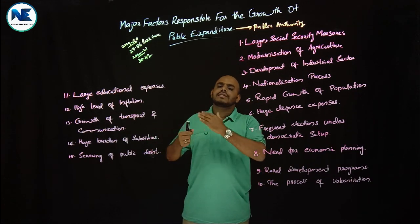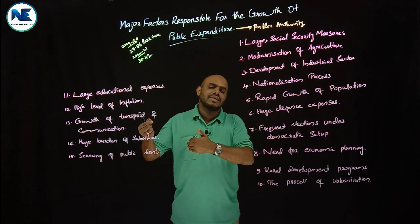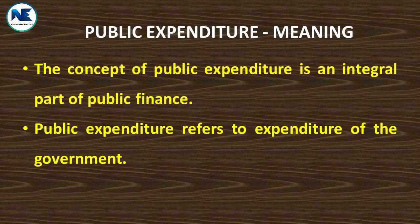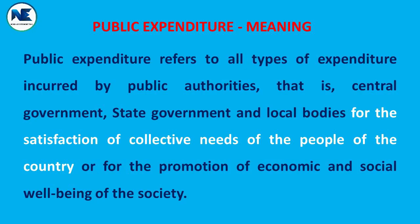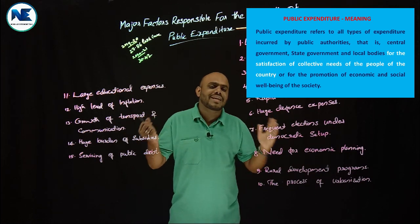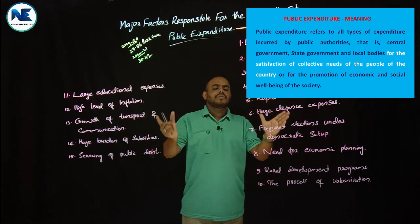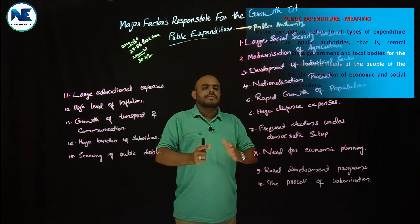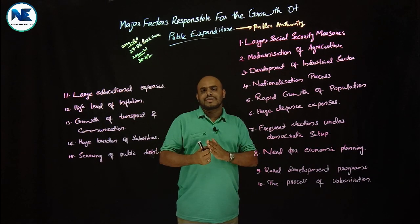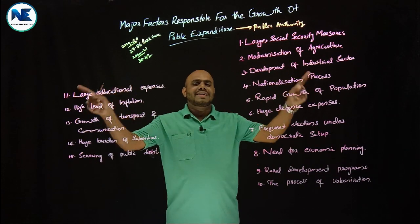Public expenditure is all expenses incurred by the government or public authority — like central government, state government, or local self-government. It may be for defense, maintaining law and order, or welfare of the people. In the modern perspective, the welfare-oriented government's public expenditure covers a large range of actual public expenditure appearances.